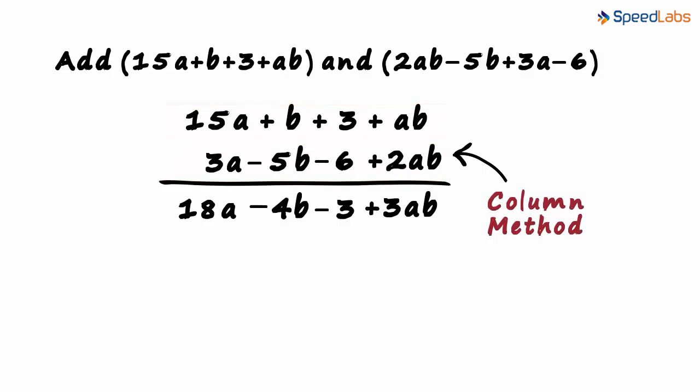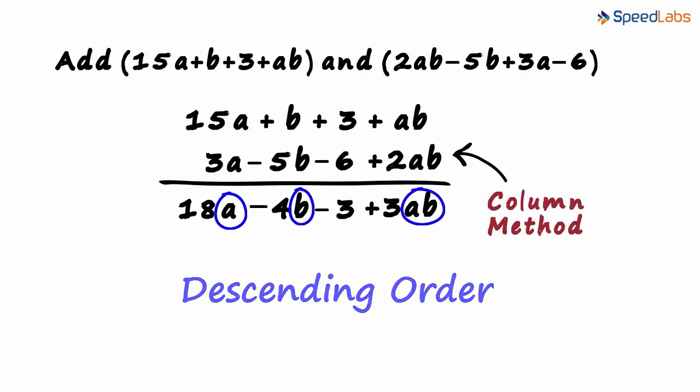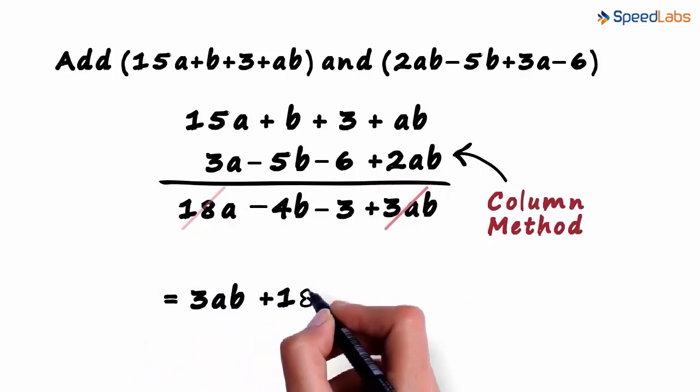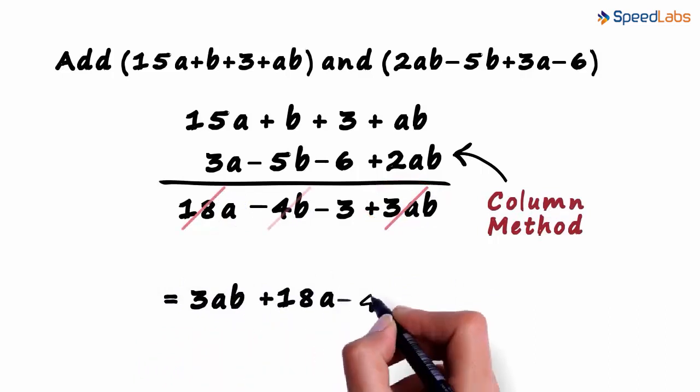But wait, are we forgetting something? Yes, we have to write the terms in the descending order of the exponents of their variables. 3ab will come first. Then we have 18a. Then minus 4b. And finally the constant 3.